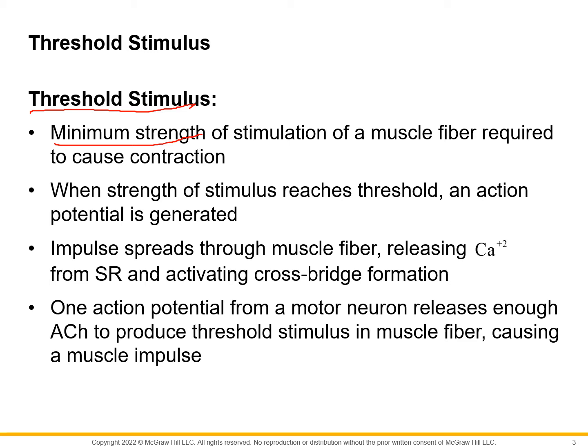As soon as we hit the threshold stimulus, an action potential is generated and it goes through the transverse tubules and electrifies the sarcoplasmic reticulum. The SR releases calcium, which binds to troponin, causing tropomyosin to be removed from the binding sites. Then the myosin heads bind to actin forming cross bridges, releasing ADP and phosphate. The ADP and phosphate bind together to form ATP and the cycle repeats.